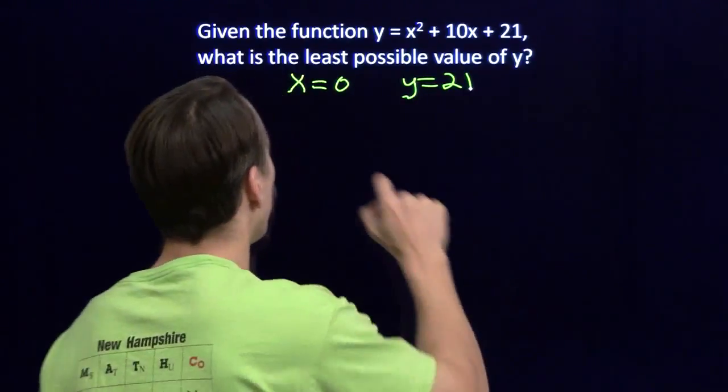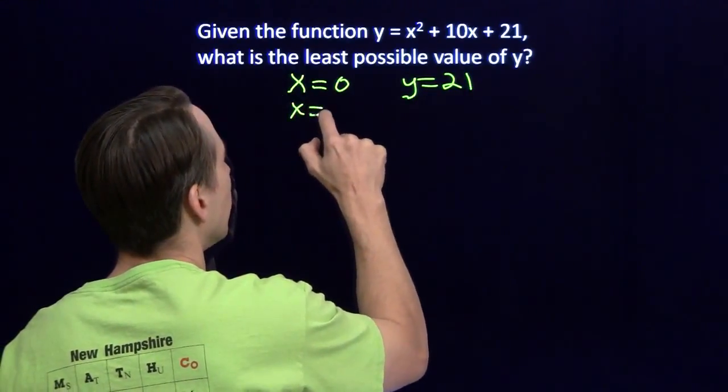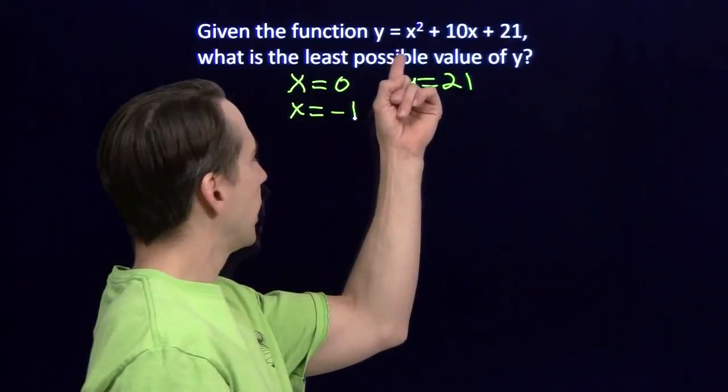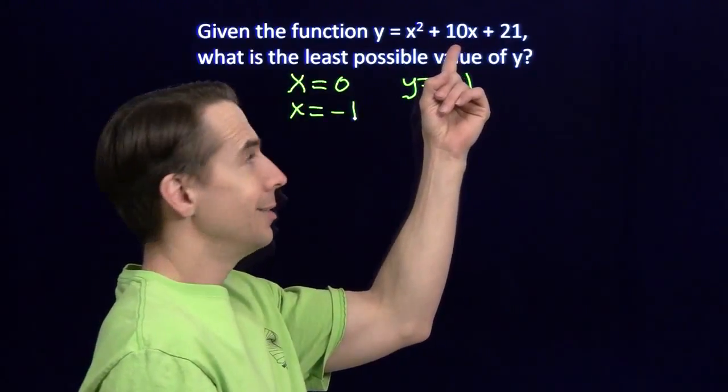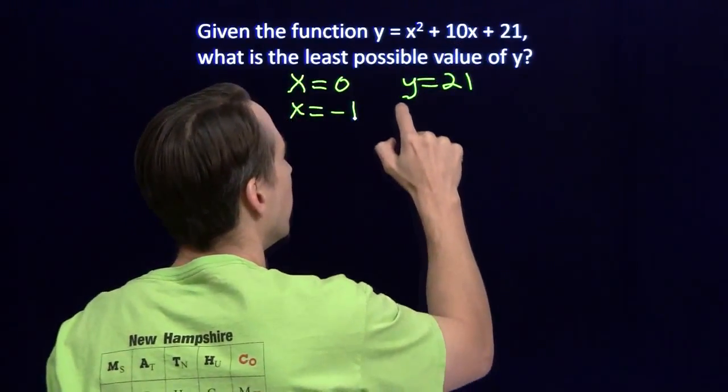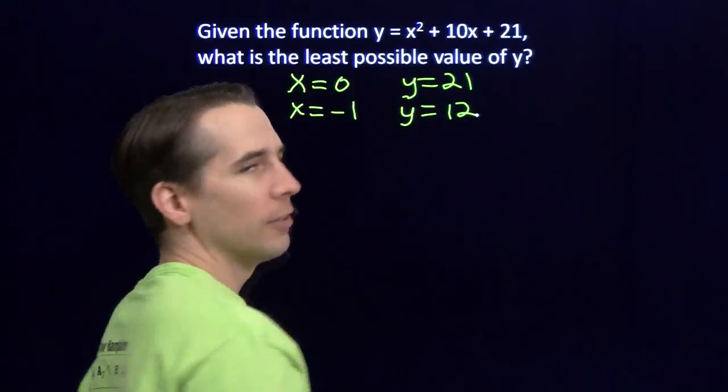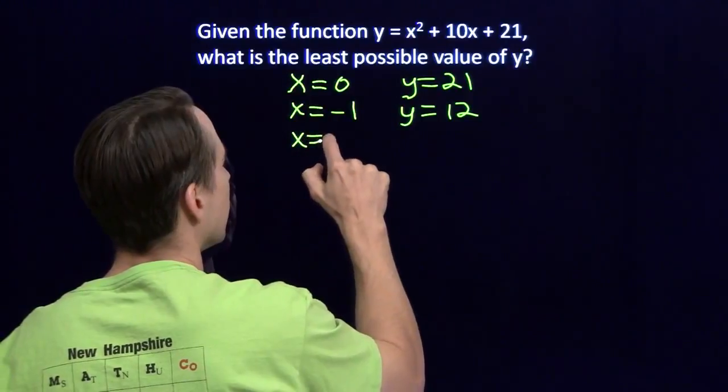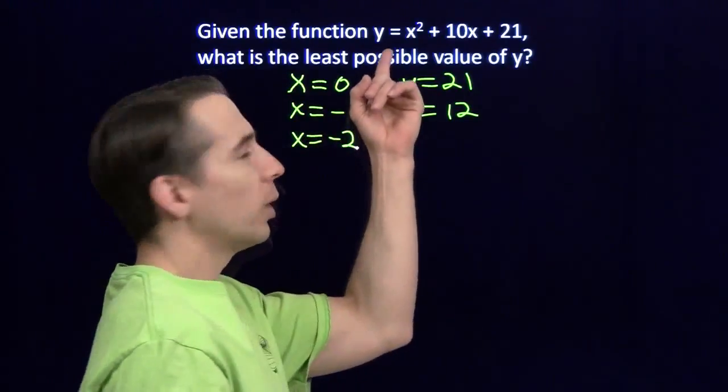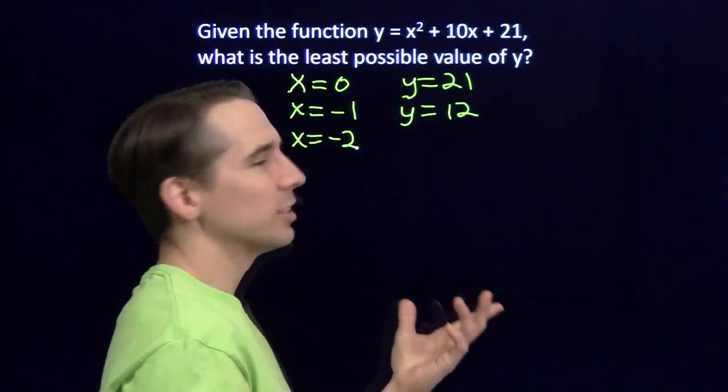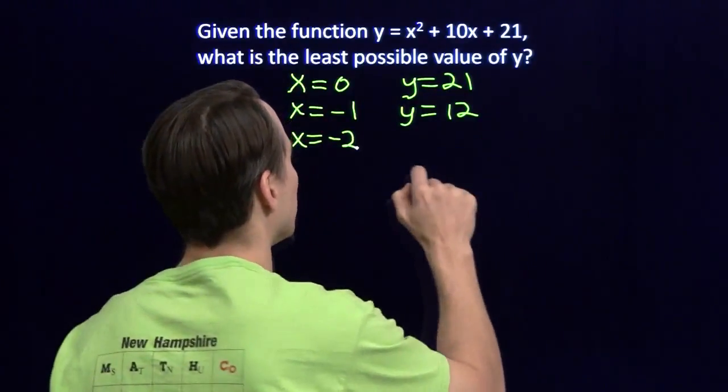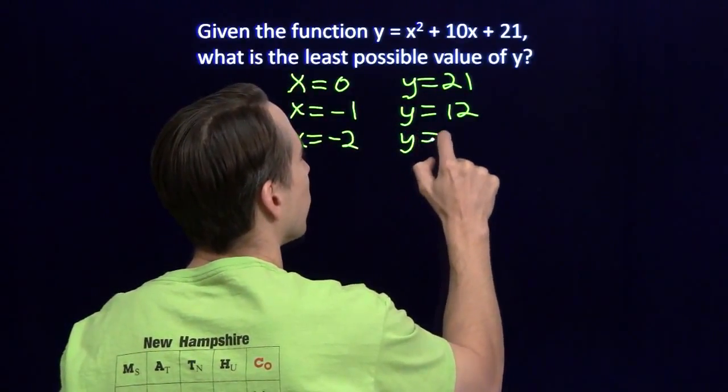We can go lower than 0. Let's try negative 1. If I put in x equals negative 1, I get 1 minus 10 is minus 9, plus 21. That gives me y is 12. If I put in negative 2 for x, negative 2 squared is 4, minus 20 is minus 16, plus 21. I can get even smaller.